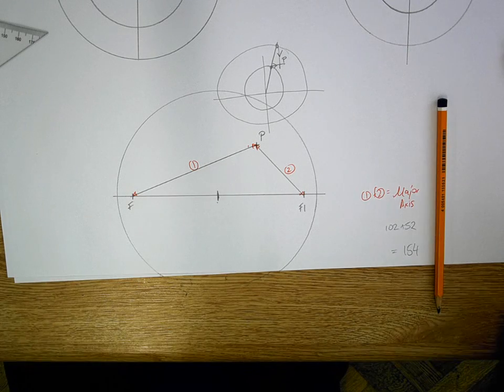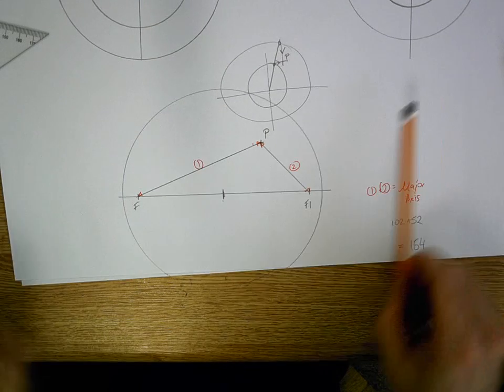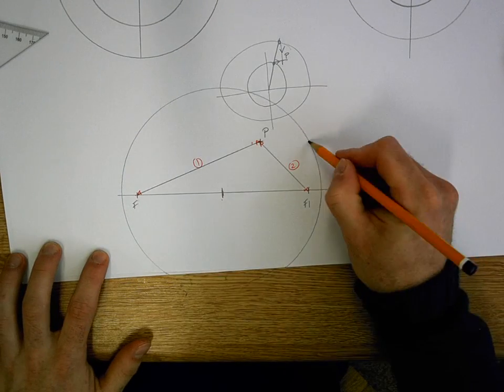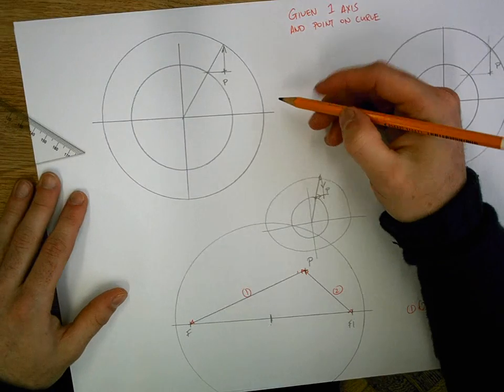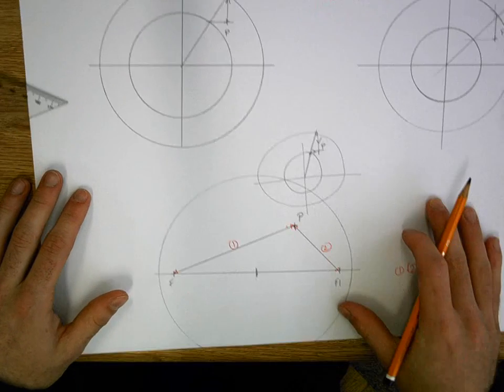And then what we do is we find ourselves in a similar kind of location. We have point P, we have the major circle. So we're going to repeat the process from up here.